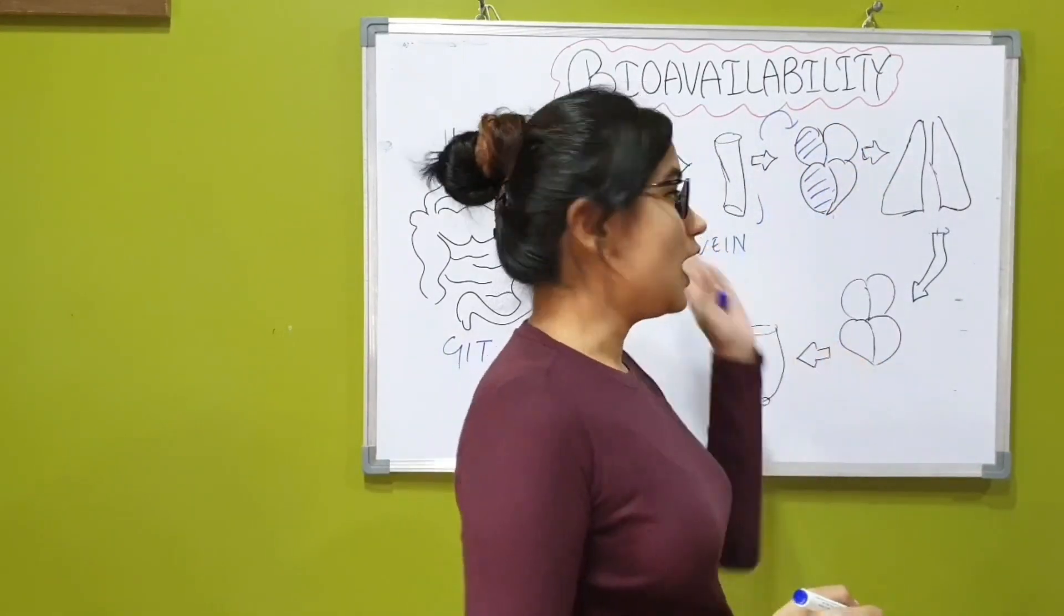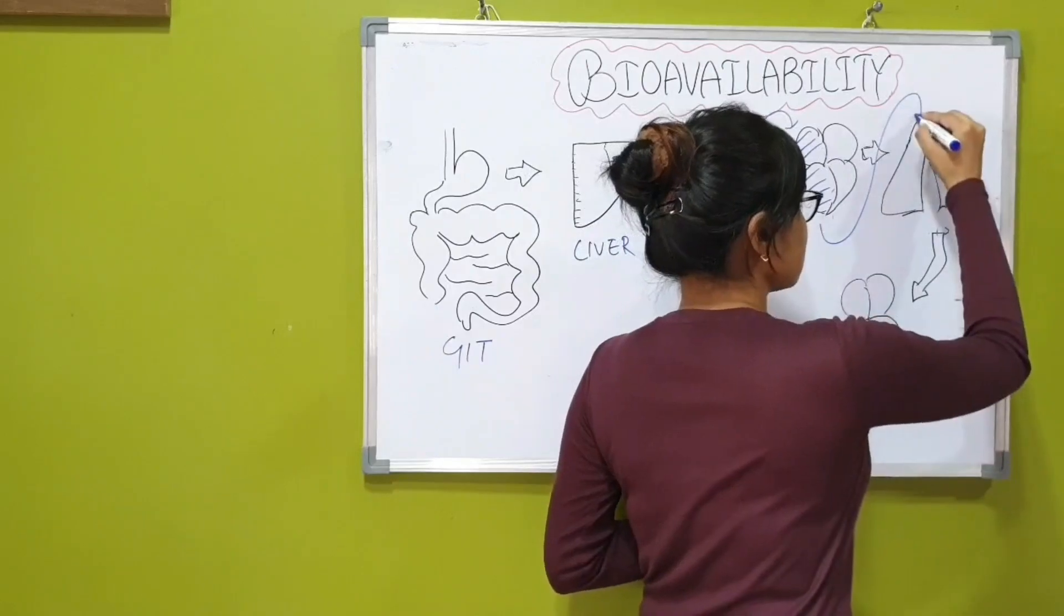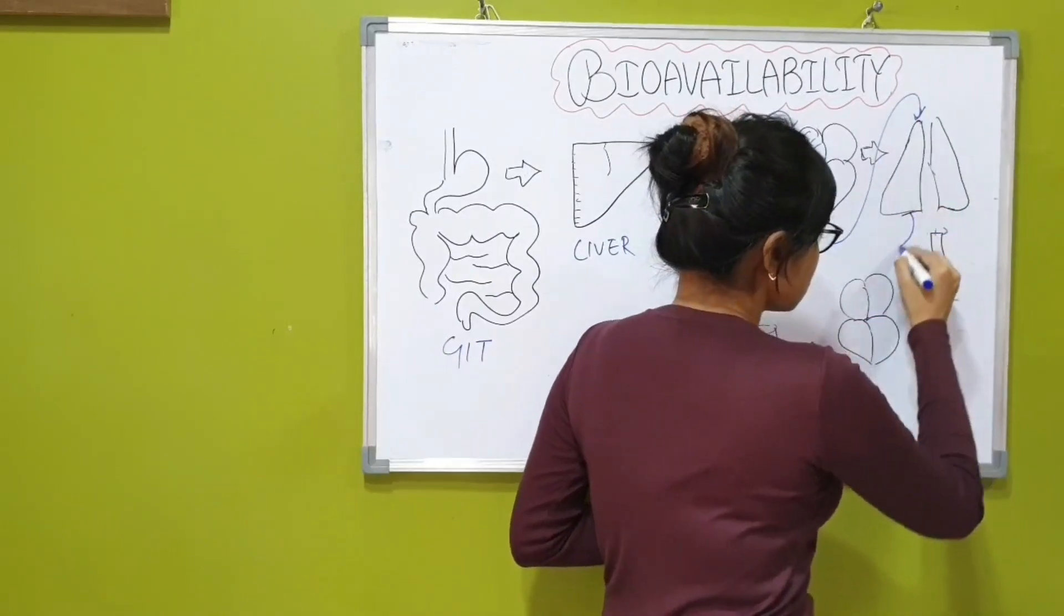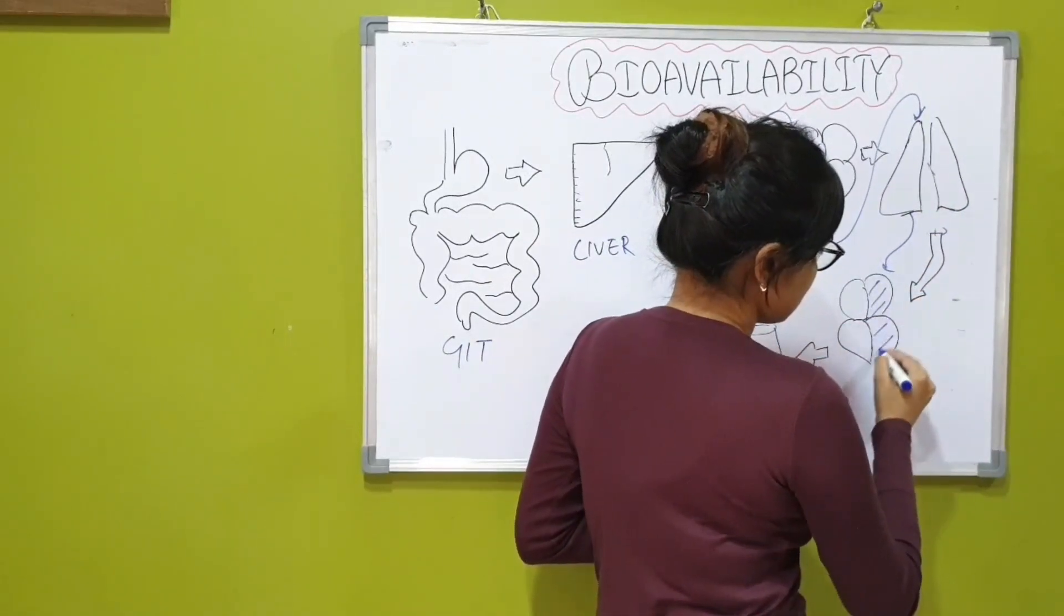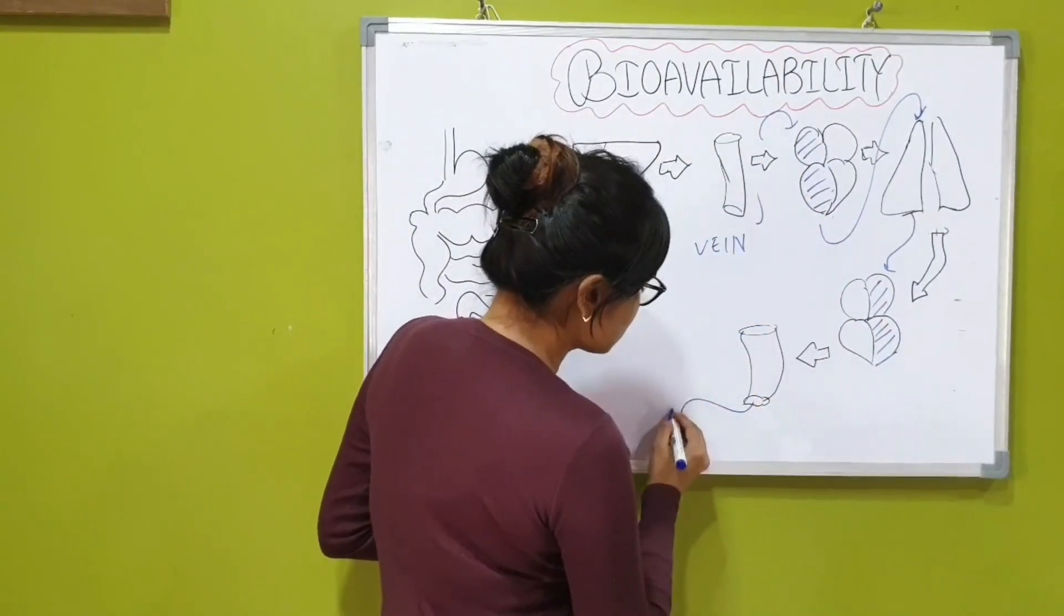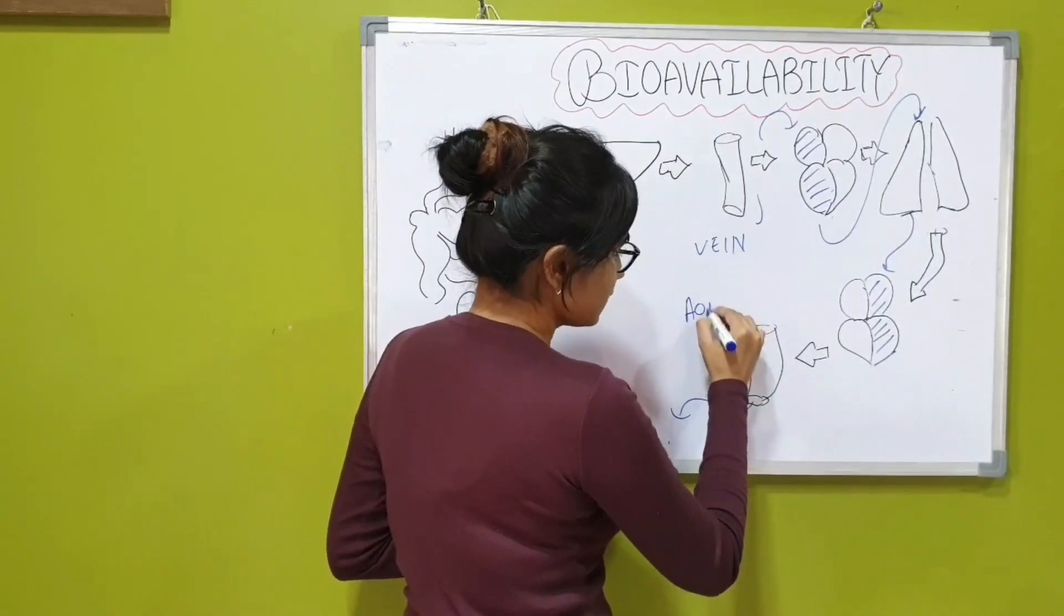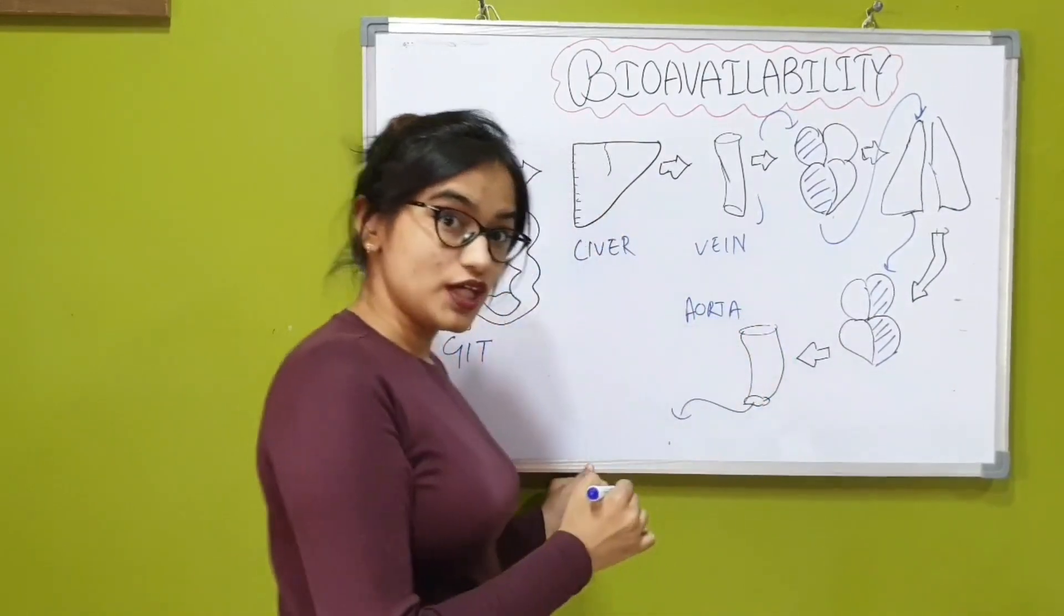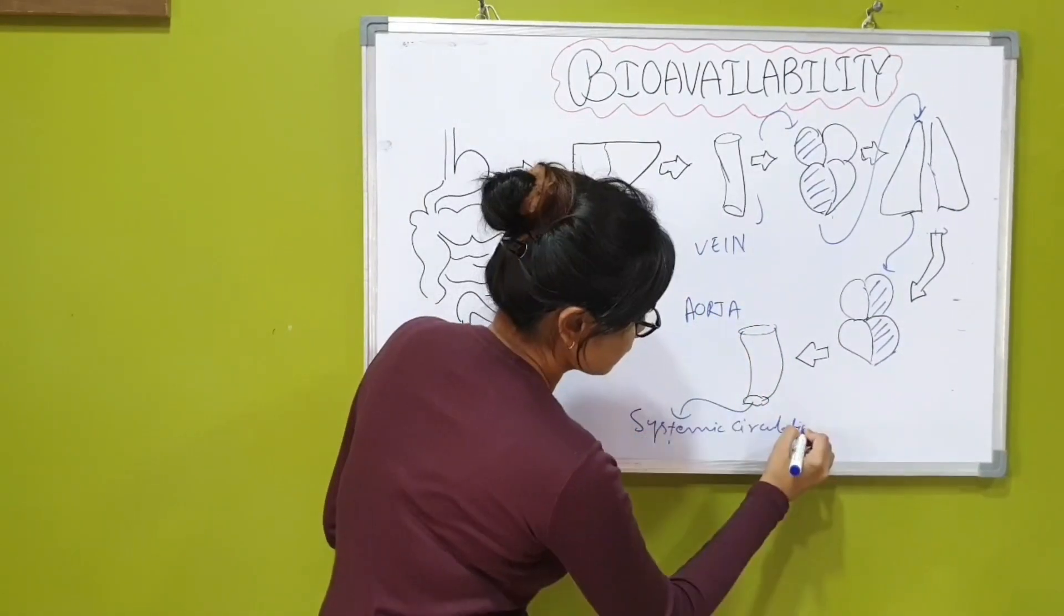From the right side of the heart, the blood flows into the lungs and then to the left side of the heart through pulmonary vein and finally out through the aorta into the systemic circulation.